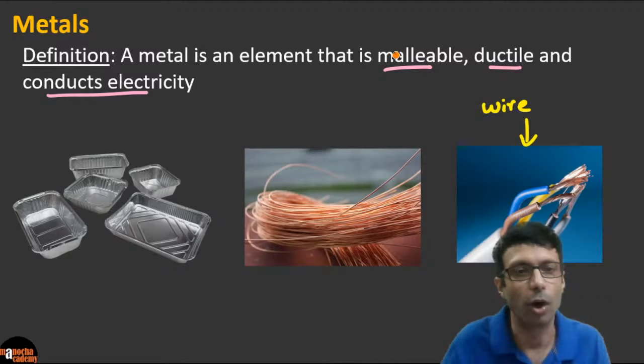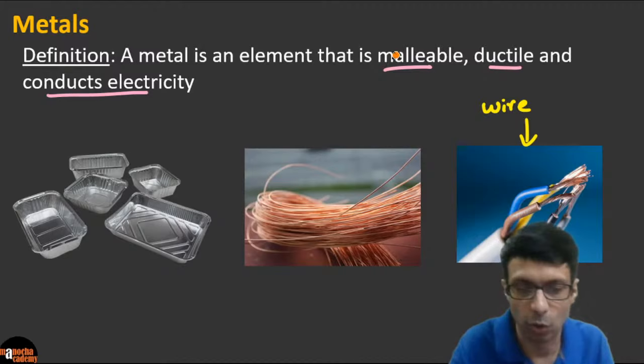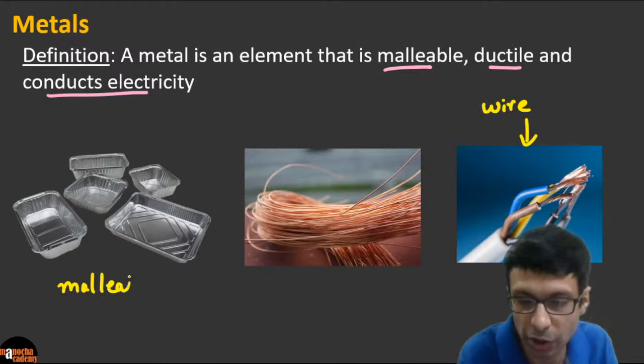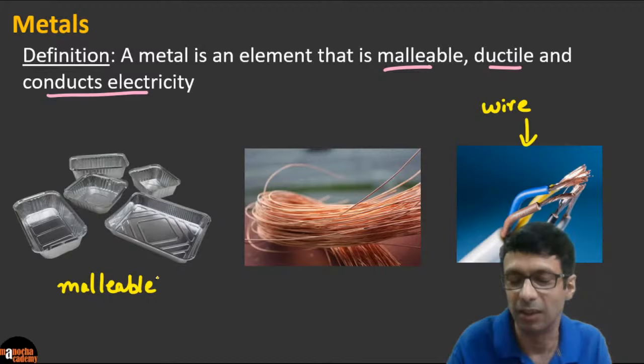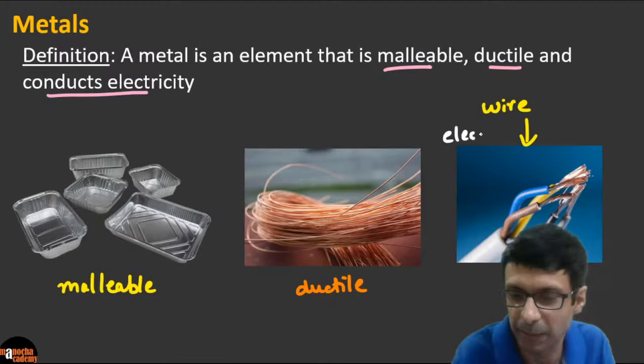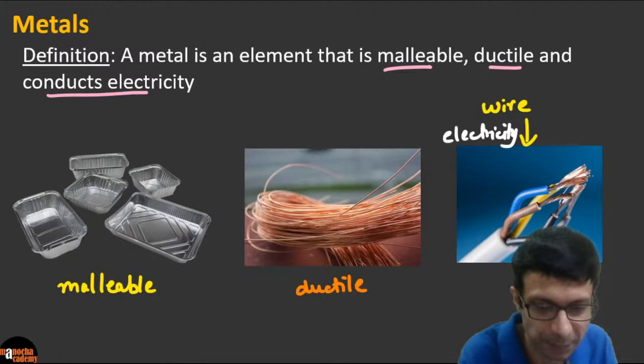Malleability means a metal can be beaten into sheets — like the aluminium foils you see here, these containers made of aluminium. Ductile means it can be drawn into wires. These are very important properties of metals. From experience, you know all metals are solids at room temperature — but can you give me an exception?